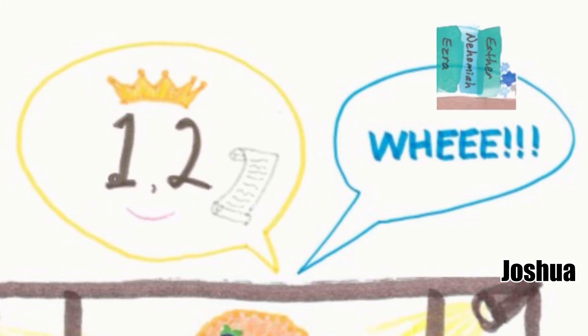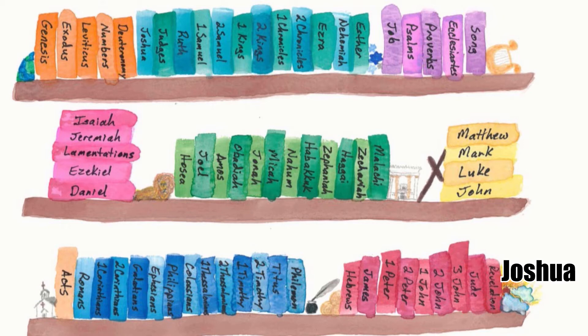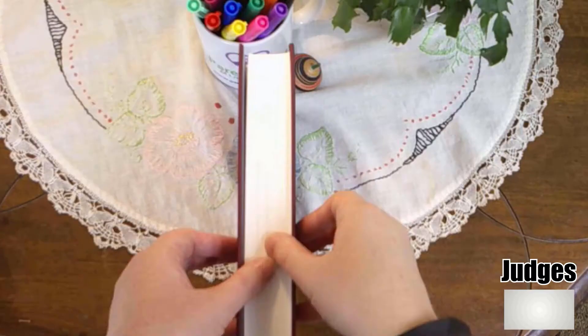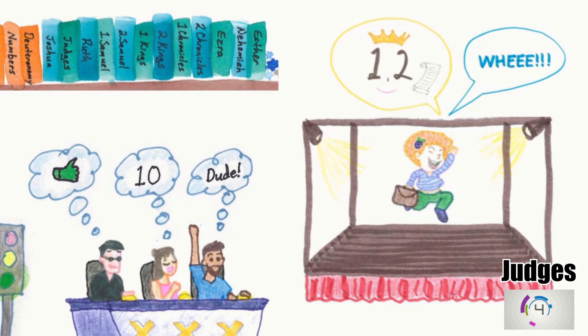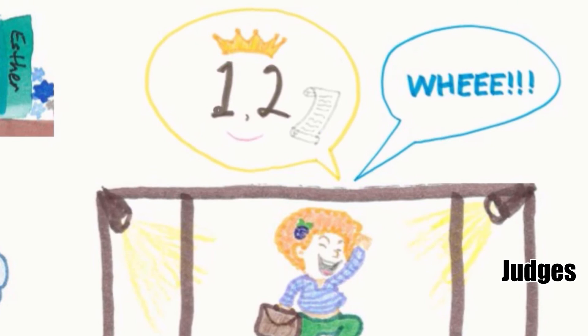Deuteronomy, Joshua, Judges. Find Judges. Open your Bible in the middle, then open the left half in the middle. Joshua judges Ruth. Ruth shouts, 'One, two, whee!' before going off to her job, which in the Bible is pronounced Job. Remember that the 'one, two' books — Sam is King of the Chronicles. The 'whee!' books are Ezra, Nehemiah, Esther. These are the books of Old Testament history.